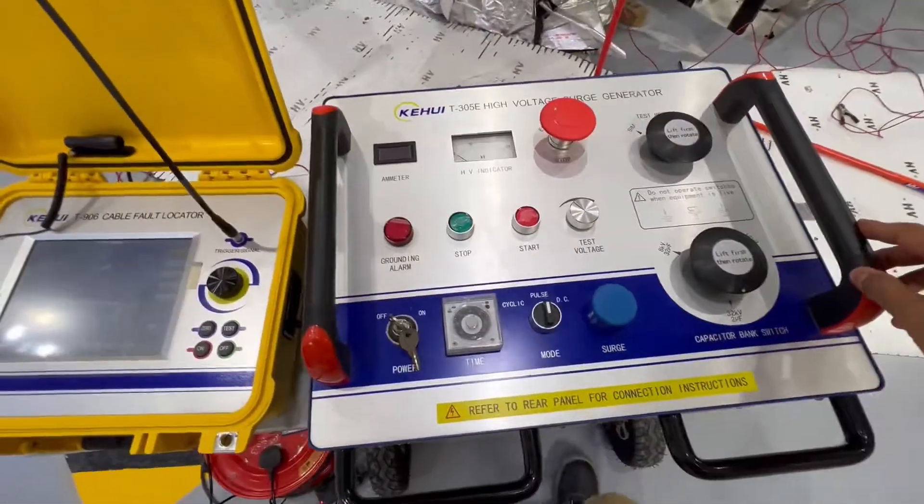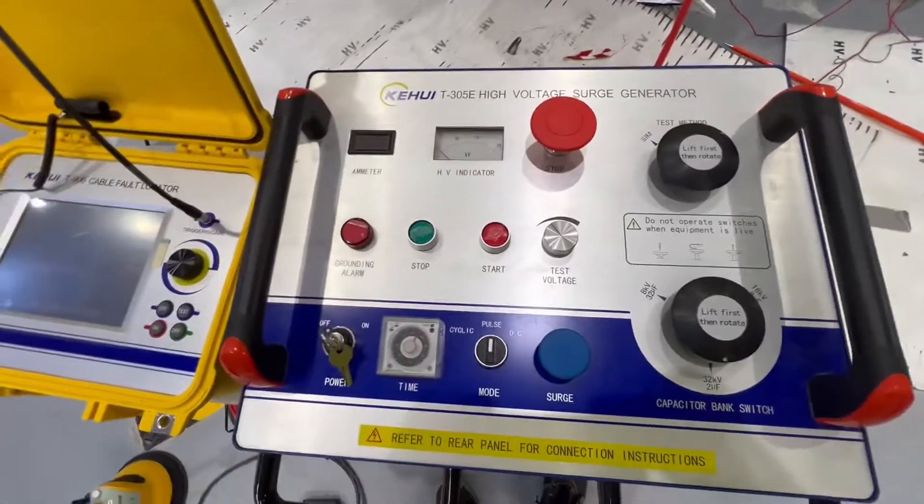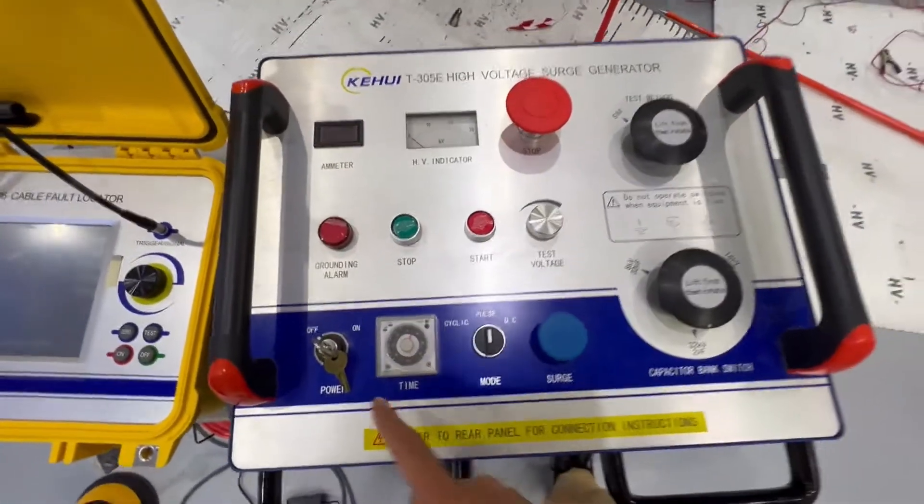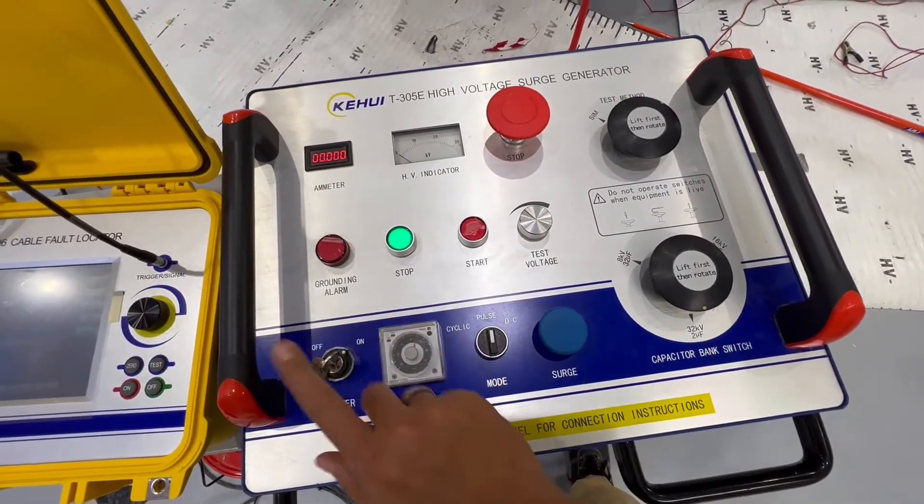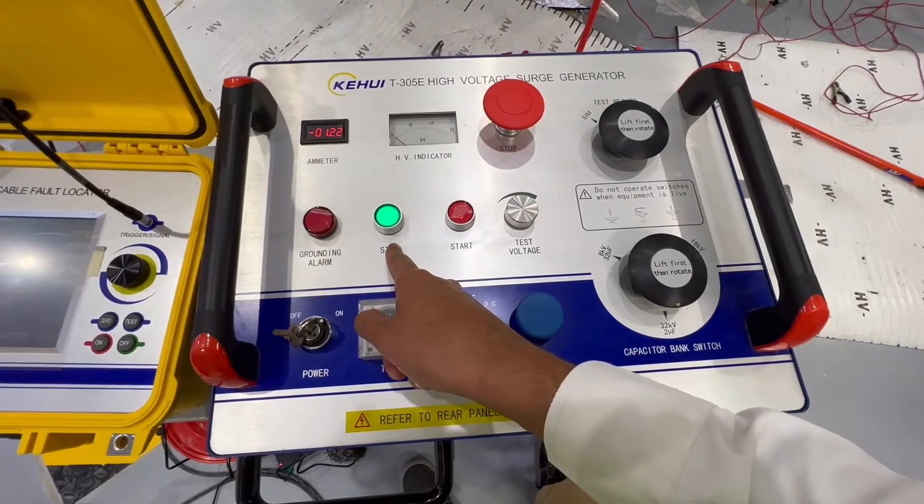You can see on the dashboard that you have a key which makes the equipment switch off and switch on. When you switch on, you can see the green indication that the equipment is ready.